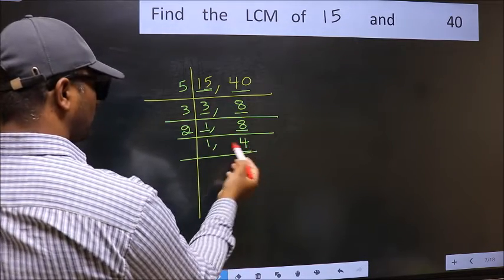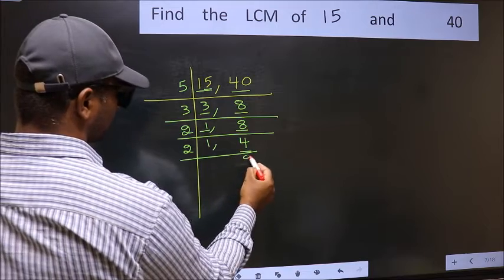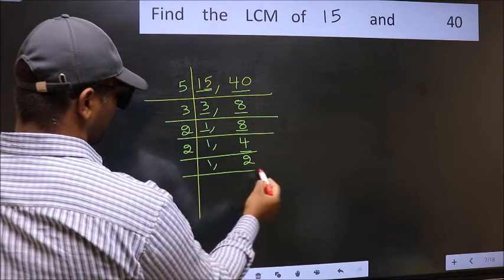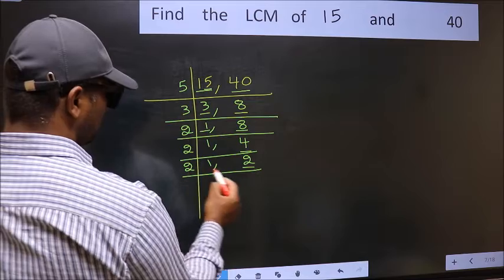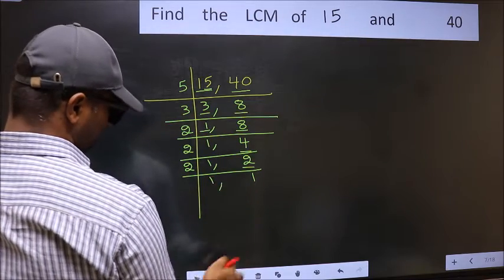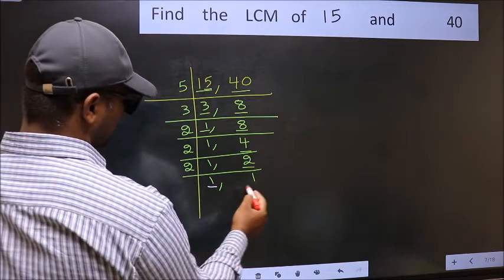Now here we have 4. 4 is 2 times 2 is 4. Now here we have 2. 2 is a prime number, so 2 times 1 is 2. So we got 1 in both the places.